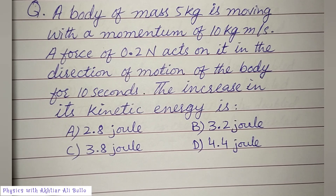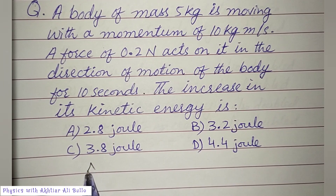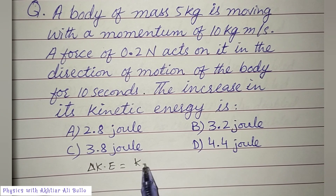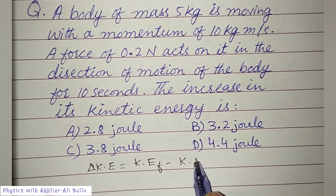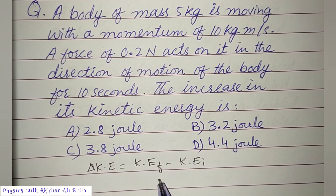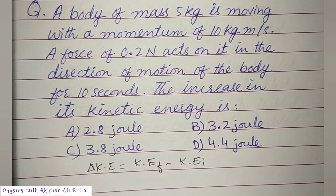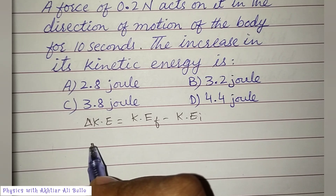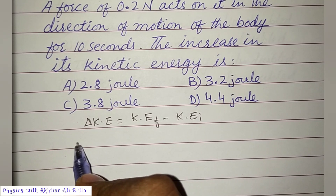We have to find the change in kinetic energy. Change in kinetic energy is equal to final kinetic energy minus initial kinetic energy. So first of all we will find the initial and final kinetic energies. We can calculate kinetic energy in terms of momentum.